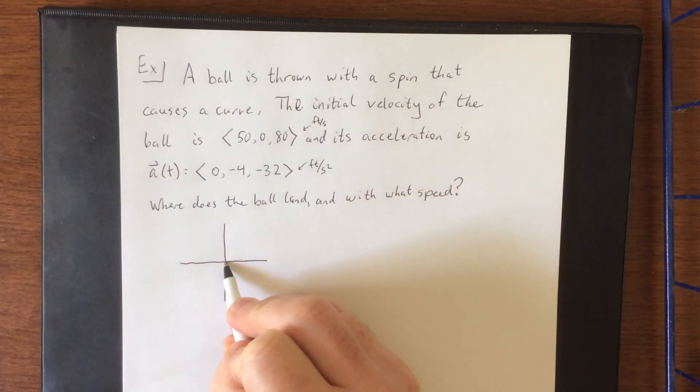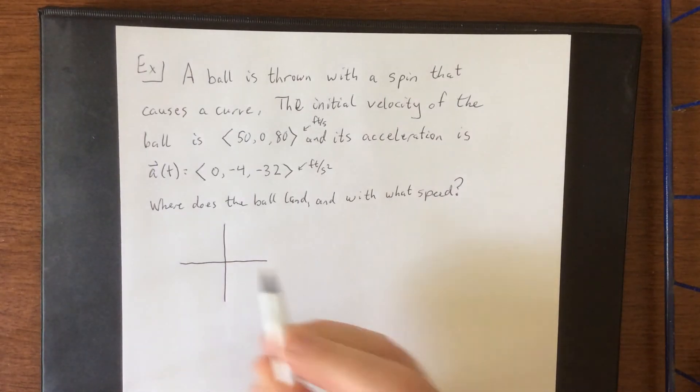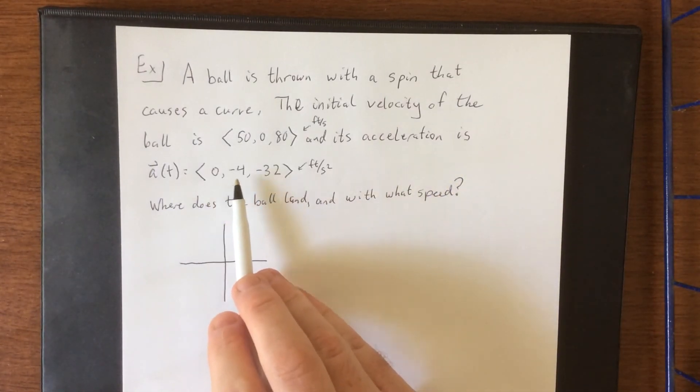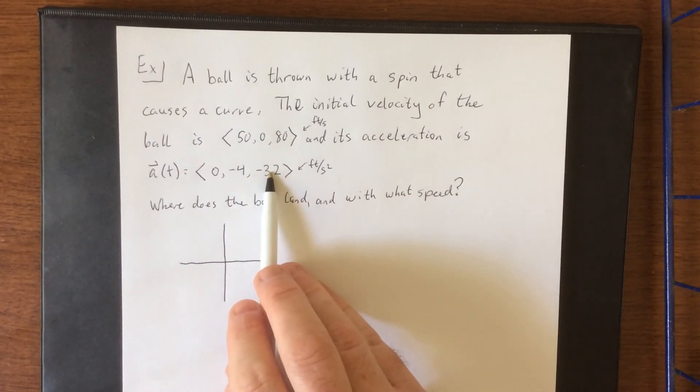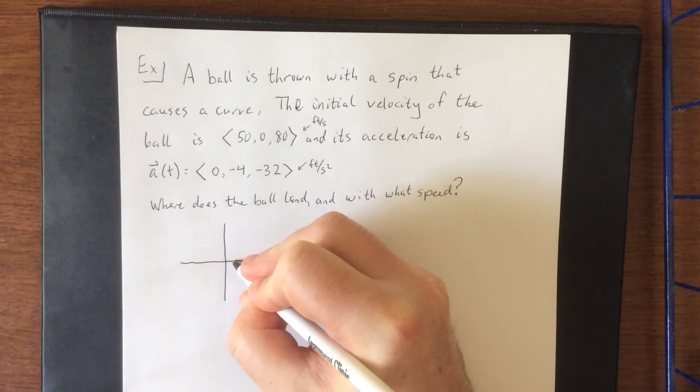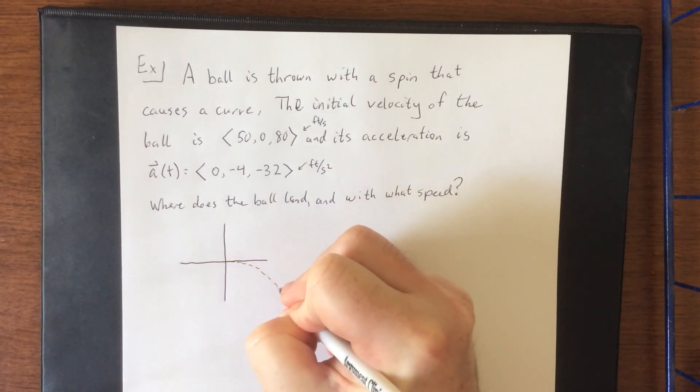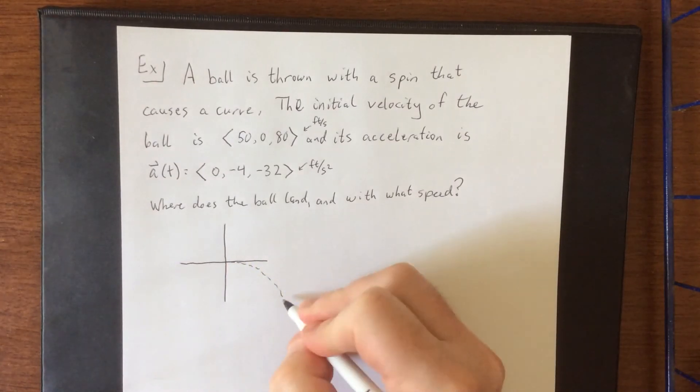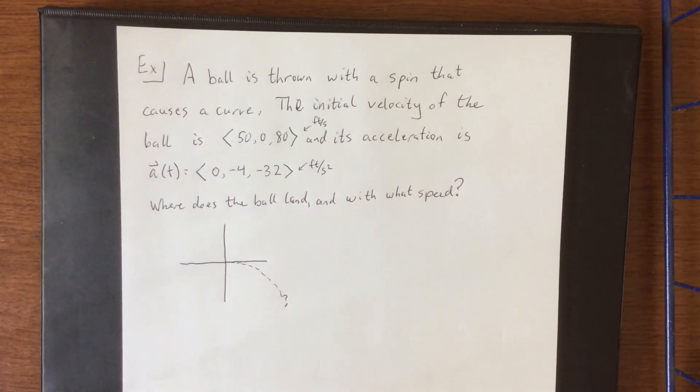So initially from the initial position, it's going to be going up as it goes to the right. Now there is an acceleration on it that is going to drag it in the southerly direction as well as back down toward the ground. Essentially what's going to happen is we're likely going to see something like this as far as the curvature of the ball is concerned, and it's going to be traveling up along this curve and then landing somewhere down here. So the question becomes, where is it going to land, and with what speed?